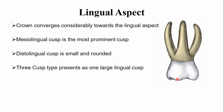From the lingual aspect, all three roots — mesial, distal, and lingual — are visible. Among these three roots, the lingual root is the largest. From the mesial aspect, the mesial lingual cusp is longer and sharper than the mesial buccal cusp.